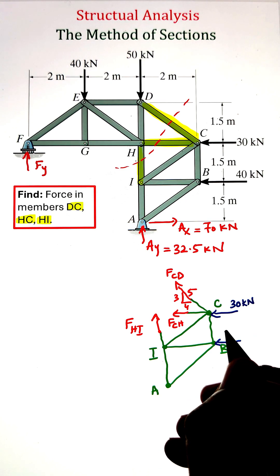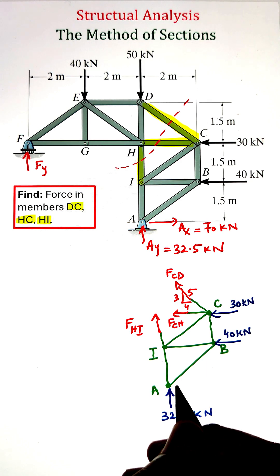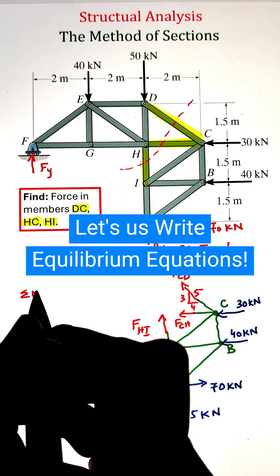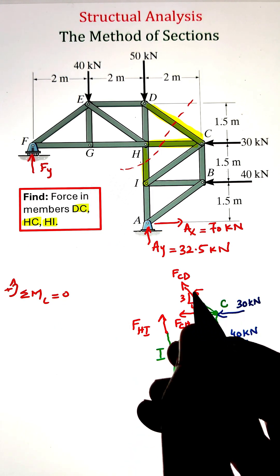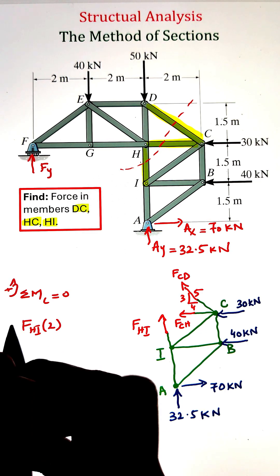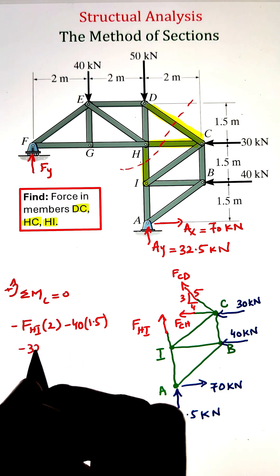Once we have developed our free body diagram, let's go ahead and write the equilibrium equations. We can start by writing the summation of moment equation about point C and equating it equals to zero. Since the 30 kilonewton force, the force in member CH, and the force in member CD are all going through point C, they won't create any moment with respect to point C.